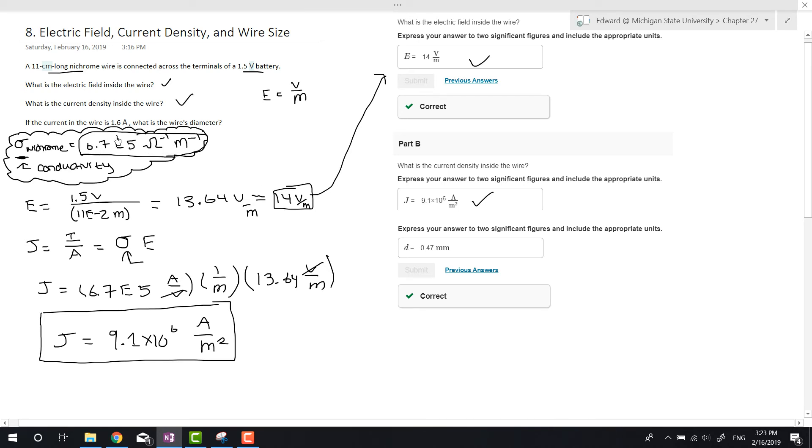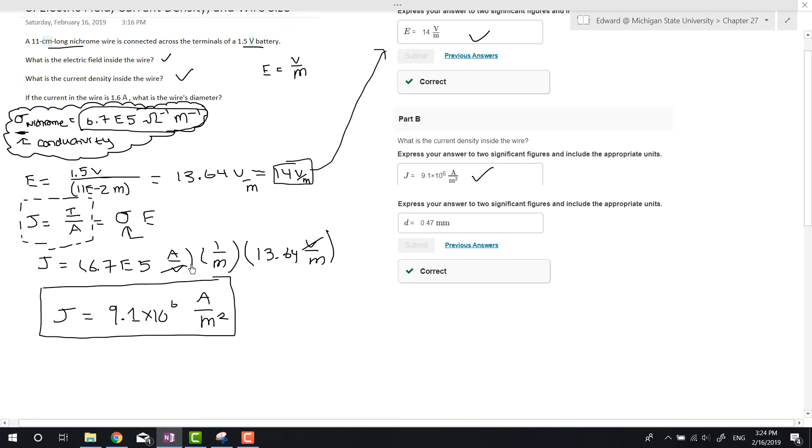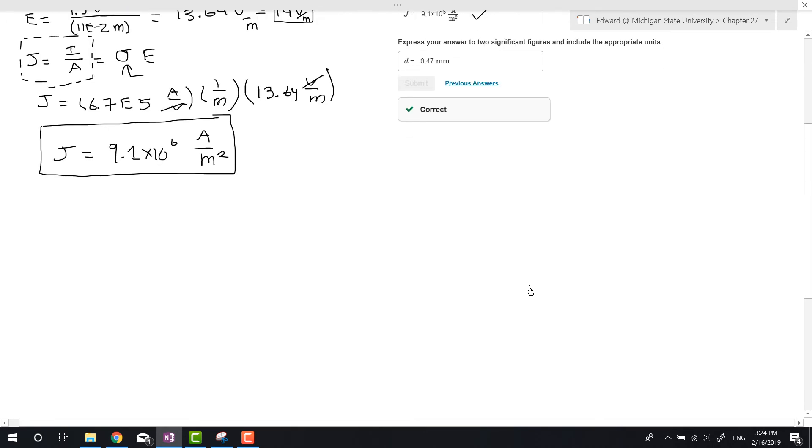For part C, if the current in the wire is 1.6 amps, find the wire's diameter. Now we can use J = I/A because we have everything. So 9.14×10^6 amps per meter squared equals I over A. They gave us I = 1.6 amps.